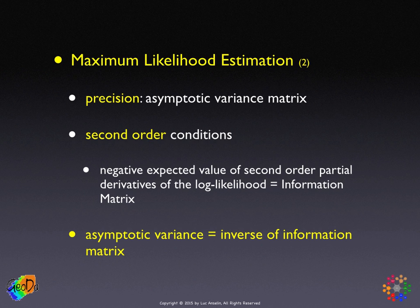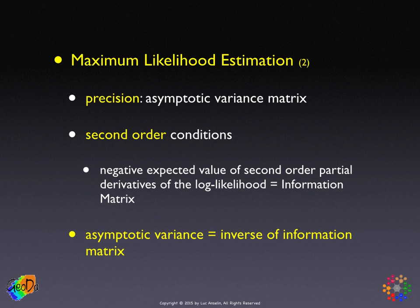So how do we get a maximum likelihood estimator for any given problem? We set up the probabilistic framework, which gives us the density function, the likelihood, and the log likelihood as a function of the data and the parameters. We maximize that likelihood function, solving an optimization problem. First-order conditions give us the parameter values that maximize it; second-order conditions give us a measure of precision or variance.